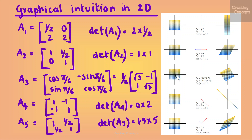The third matrix A3 rotates the points by π/6 radians, that is 30 degrees counterclockwise, and has only complex eigenvalues, reflecting that the mapping is a rotation. A rotation has to be volume-preserving, so the determinant is 1.